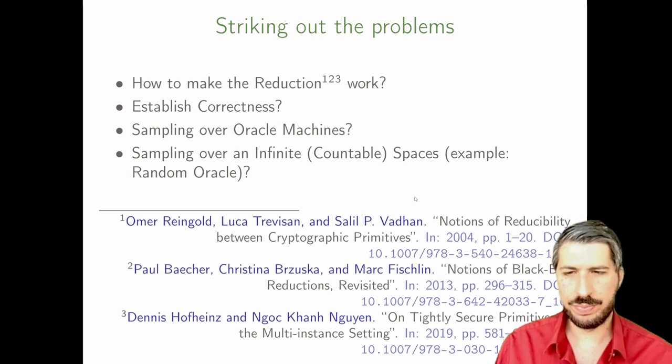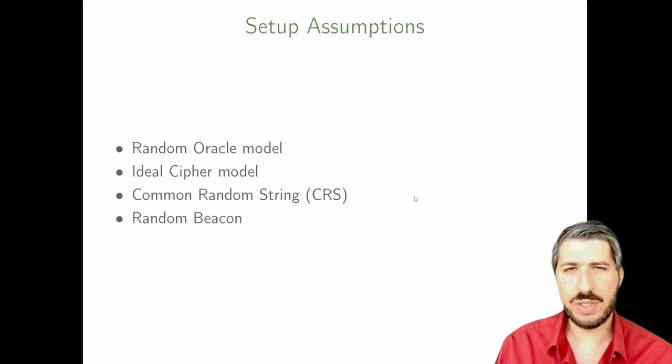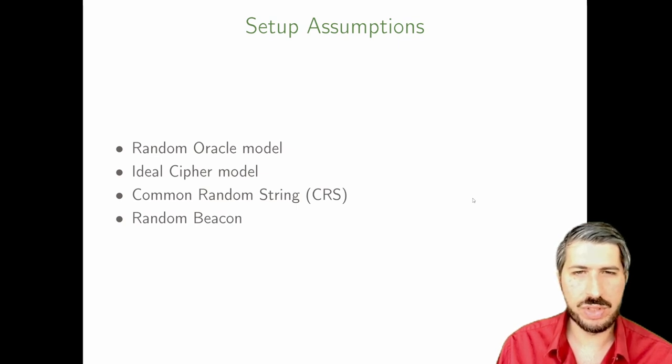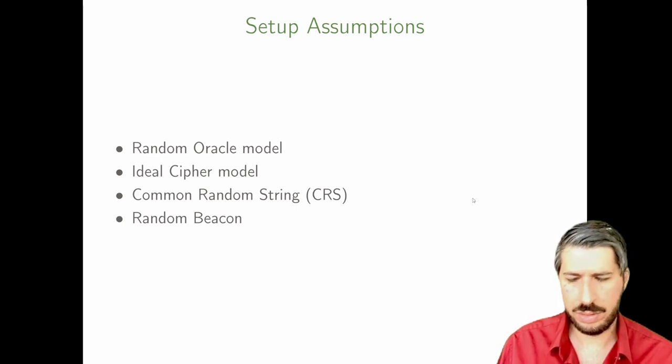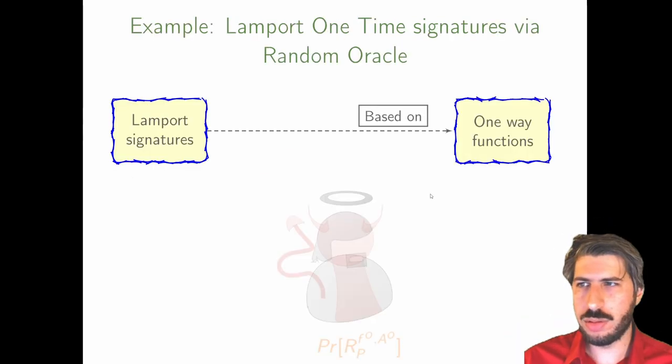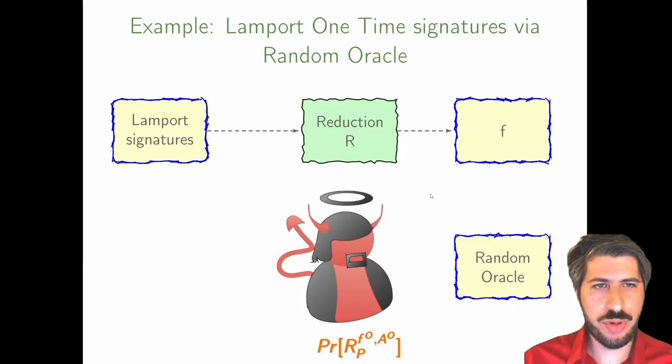Let us give some examples. Common setup assumptions in use are, of course, the random oracle model, the ideal cipher model, common reference string, or random string. You can have more exotic examples such as the random beacon. Going back to the Lamport example, let us add the random oracle for more efficient randomness.